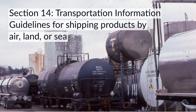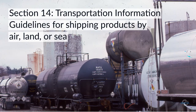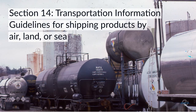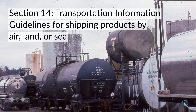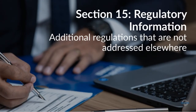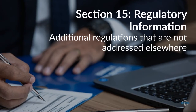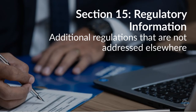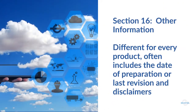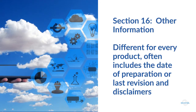Most of the information in Section 14, Transportation Information, will be used by suppliers as they ship products via air, land, or sea. If there is additional safety, health, or environmental regulations for a product not mentioned in any other section, it will be noted in Section 15, Regulatory Information. The final section of the SDS comprises any additional information, including the date of preparation or last revision, and any disclaimers.